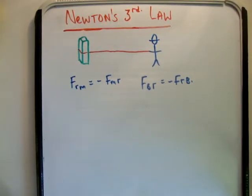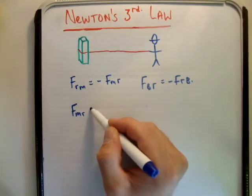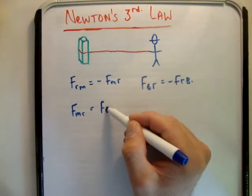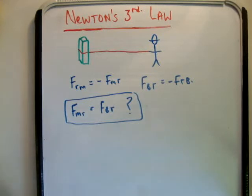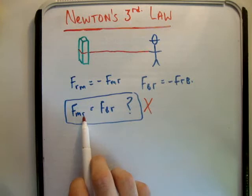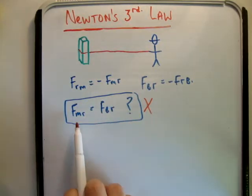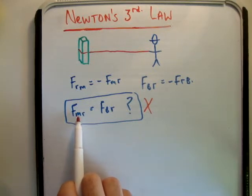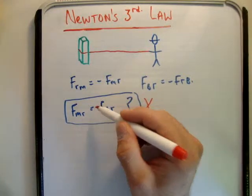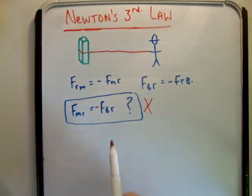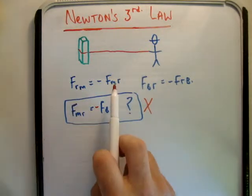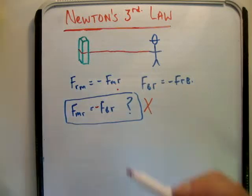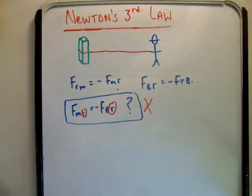That's pretty straightforward. However, consider this: is F_MR, the force of the man on the rope, equal to the force of the block on the rope? Is that a Newton's Third Law pair? The answer is no. The reason is that both forces are acting on the same thing, namely the rope. In order for it to be a Newton's Third Law pair, it would have to be F_MR equal to negative F_RM, or just swapping the two subscripts. Because they're both acting on the same body — the rope — they are not a Newton's Third Law or action-reaction pair.